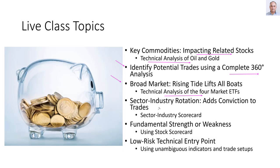In addition to aligning the trades with the market's direction, I like to align them with industry strength. If the market is bullish, I look for strong industries, and if the market is bearish, I look for weak industries. I study industry strength using a scorecard and heatmap. Once that is done, I look at the stock's fundamentals. For bullish trades, I look for fundamental strength in terms of growth or valuation, and for bearish opportunities I look for weak fundamentals. I study that using the scorecard for the stocks.